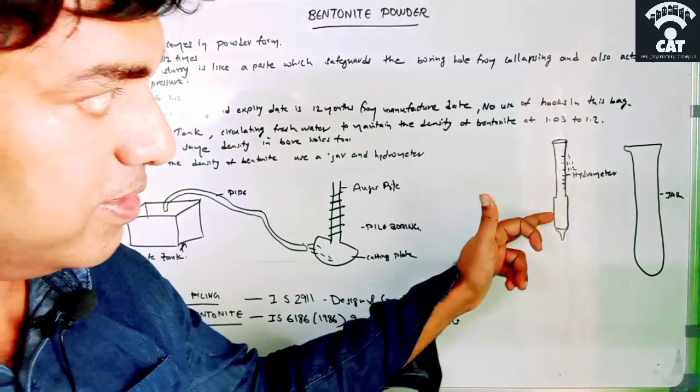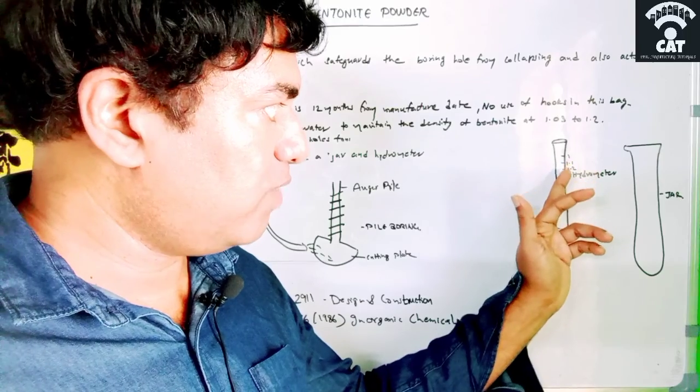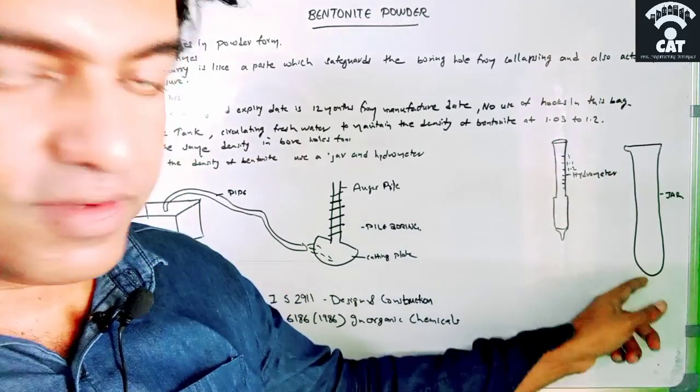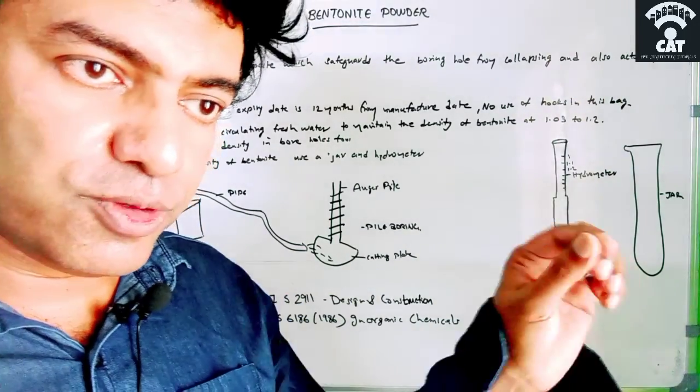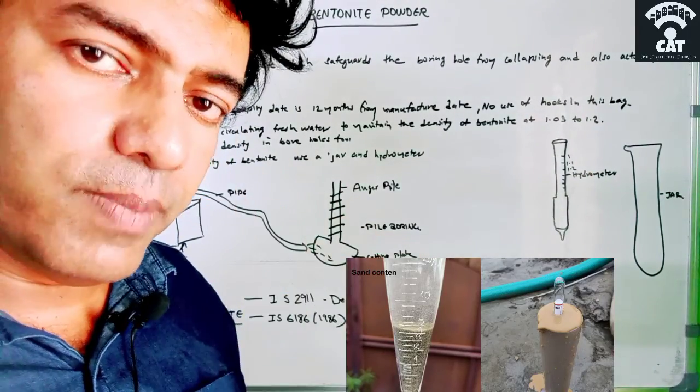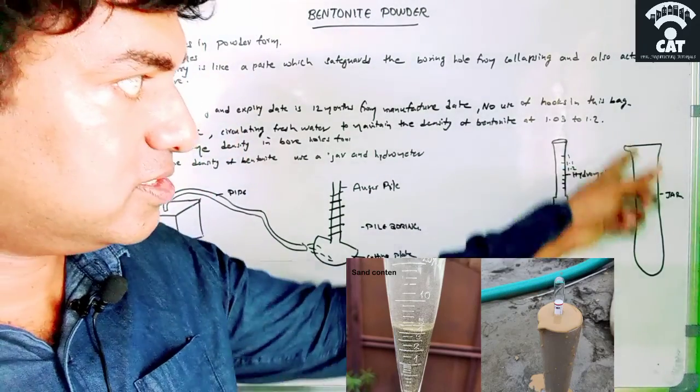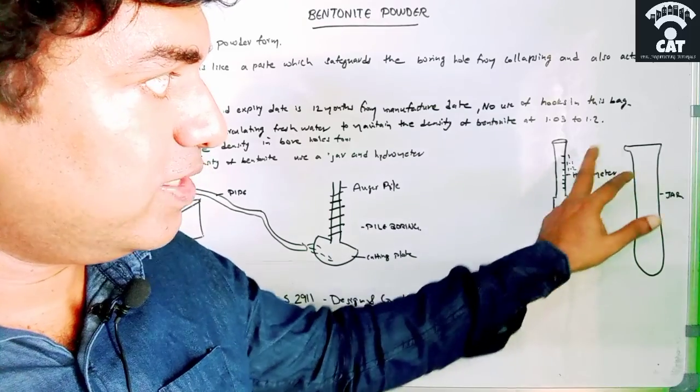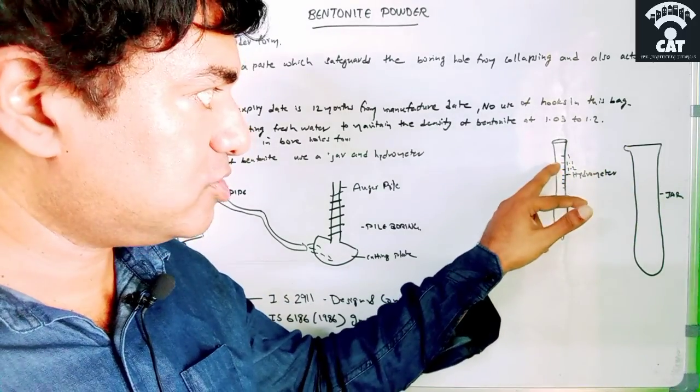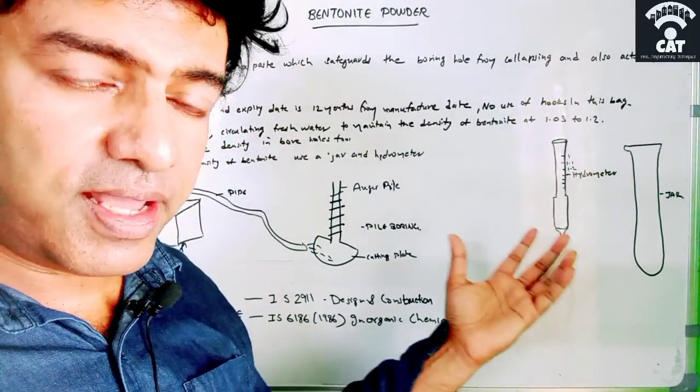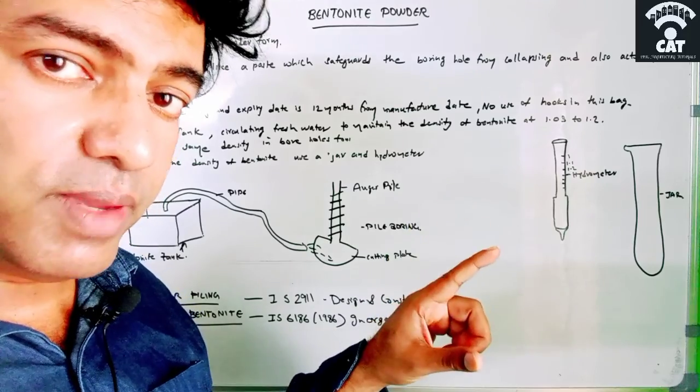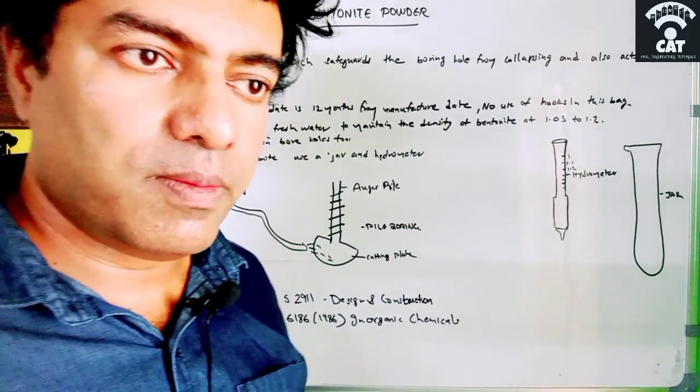Then we need to take this hydrometer in which we can see there are measurements like 1, 1.1, 1.2 like that. We have to put this hydrometer into this jar filled with the bentonite slurry. As you put it in, it will float in the bentonite slurry because of the density of the bentonite. It will automatically float in this jar. When it floats, you will get the reading correspondingly. The level at which the bentonite slurry keeps this hydrometer in it will give us the correct reading of the density.